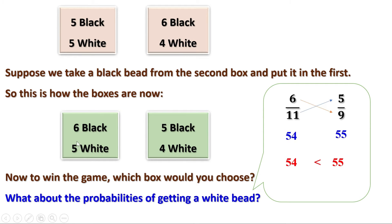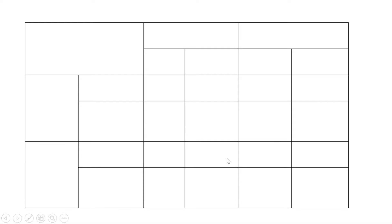In the first box there are 5 white beads and a total of 11 beads, so the probability of getting a white bead is 5 by 11. Similarly, the probability of getting a white bead from the second box is 4 by 9. Now let us tabulate all these probabilities.